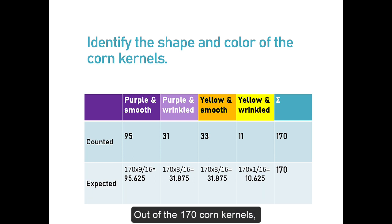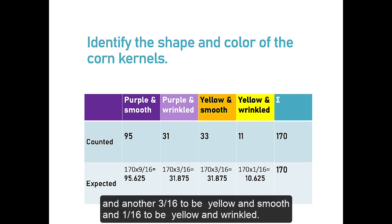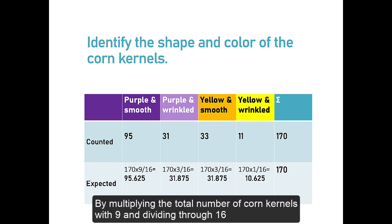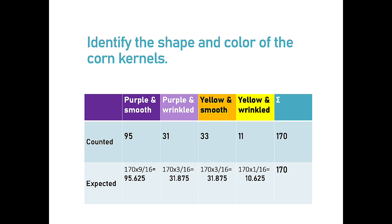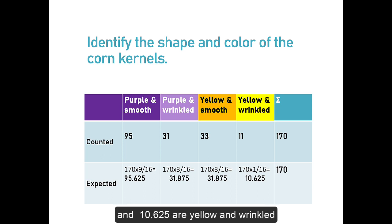Out of the 170 corn kernels, we expect 9/16ths to be purple and smooth, 3/16ths to be purple and wrinkled, and another 3/16ths to be yellow and smooth, and 1/16th to be yellow and wrinkled. By multiplying the total number of corn kernels with 9 and dividing through 16 we calculate 95.625 out of 170 kernels should be purple and smooth. 31.875 to be purple and wrinkled respectively yellow and smooth, and 10.625 to be yellow and wrinkled.